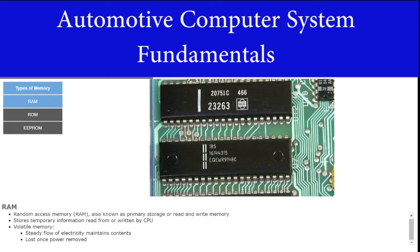Random access memory, or RAM, may also be known as primary storage or read and write memory. The CPU can access RAM data randomly. Temporary information that is read from or written by the CPU is stored as RAM. RAM is considered volatile memory because a steady flow of electricity is needed to maintain its contents. Once power is removed from the system, the data stored in RAM is lost.